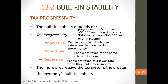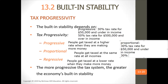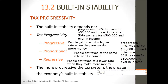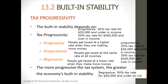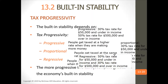For proportional: 30% tax rate for $50,000 and under, and 30% tax rate for $500,000 and over in income. For regressive, it's basically the opposite of progressive: 15% tax rate for $50,000 and under, and 30% tax rate for $500,000 and over.